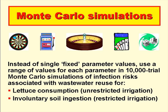We then use a computer program that randomly selects a value for each parameter from within the range specified for it, and calculates the resulting risk per person per year. It then repeats this single calculation for a total of usually 10,000 times, and calculates median infection risks, or 95th percentile risks, or whatever we want. This iteration is called a multi-trial — in our case a 10,000-trial Monte Carlo simulation — and in our case it's a simulation of the health risks associated with wastewater irrigation.